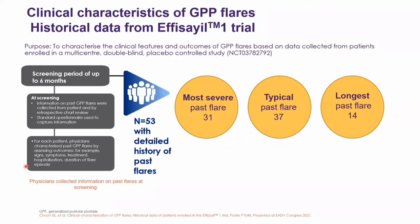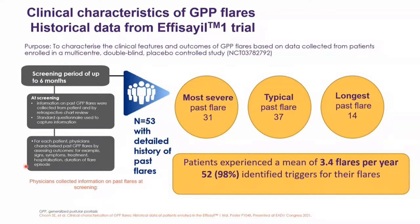Now let's look at the clinical characteristics of GPP flare based on historical data from the EFFISAYP-1 study. EFFISAYP-1 is the first randomized controlled study for patients with GPP, comparing spesolimab — an IL-36 receptor antagonist — to placebo. On screening, patients were asked about past GPP flares, counter-checked with retrospective chart review. Among 53 patients randomized, 31 most severe, 37 typical, and 14 longest flares were identified. The average number of flares per year was 3.4.